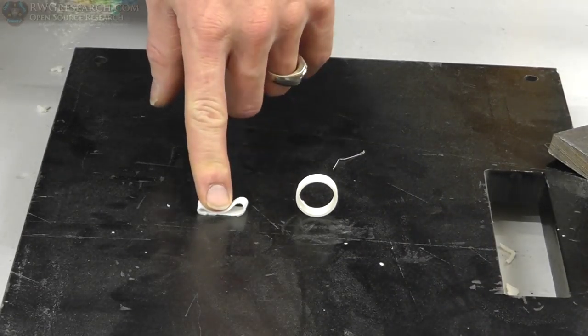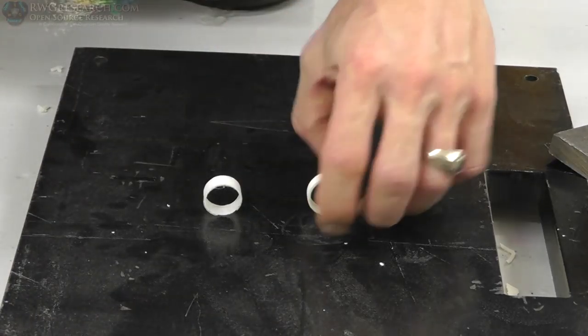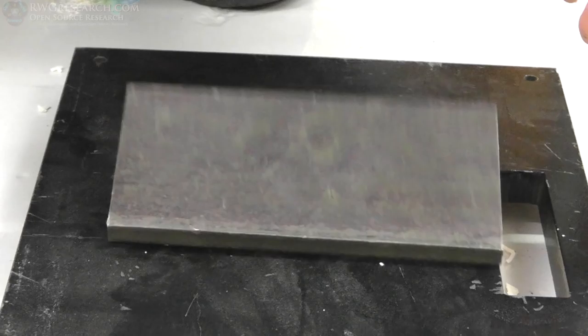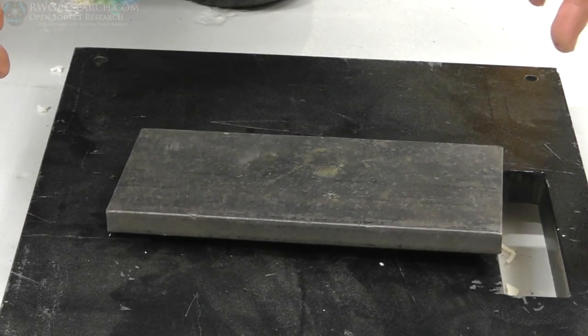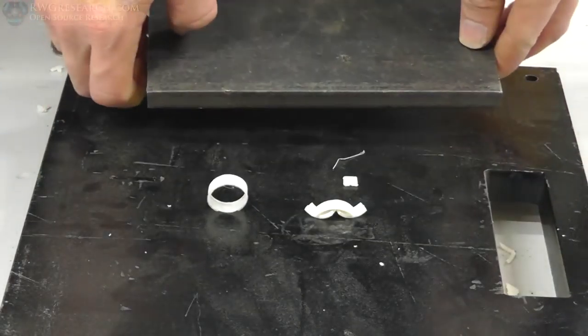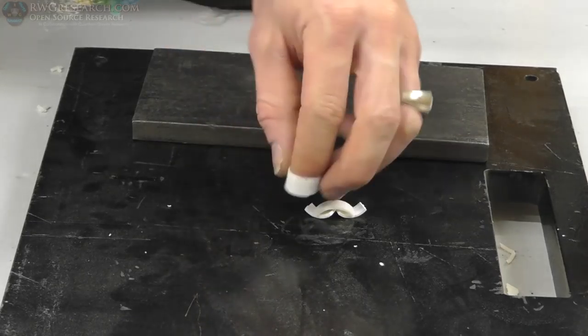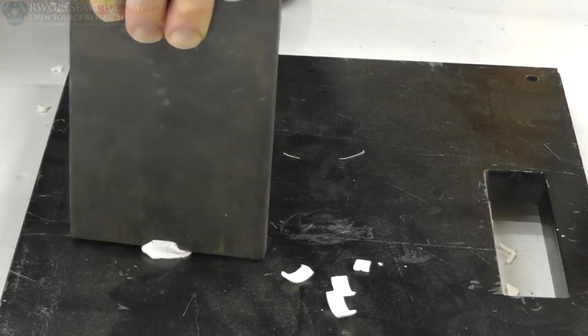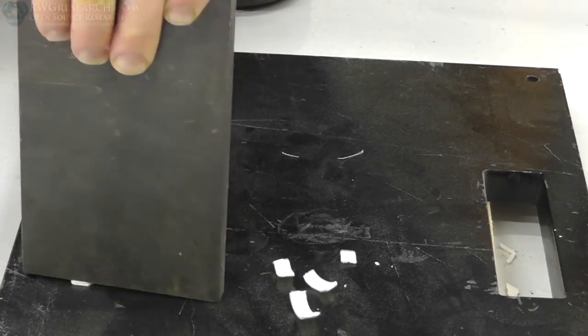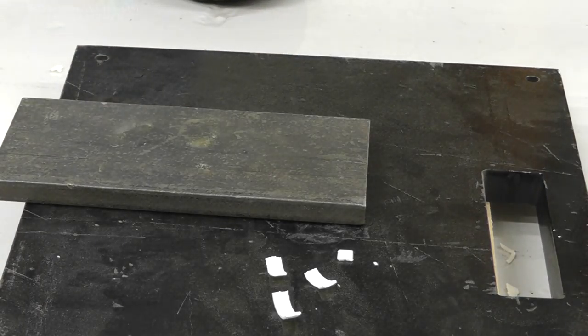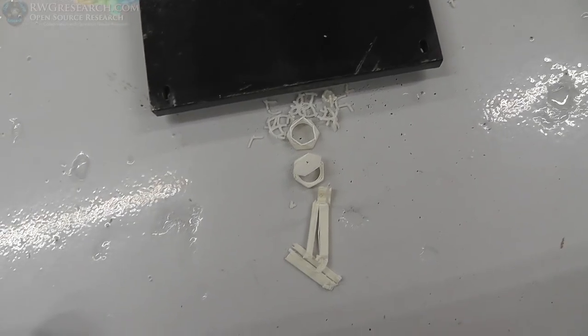All right, this is the ring test. This is TPU. This is ABS. I'm only going to drop this from this high, which is about five inches. Yeah, imagine that. Pretty tough stuff. Pretty tough stuff.